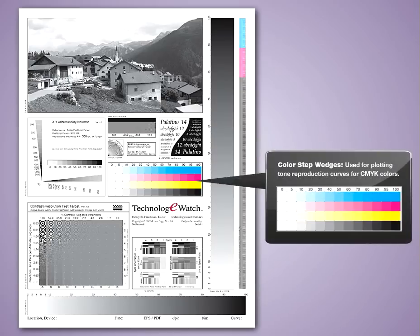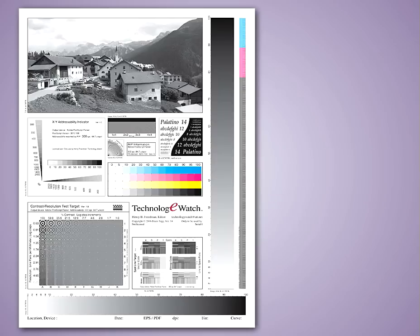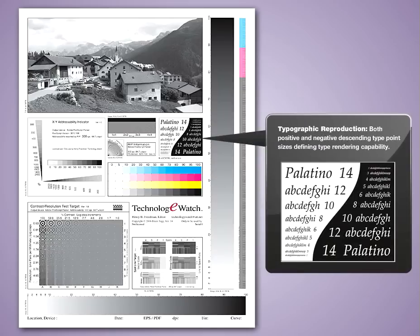Color step wedges. Used for plotting tone reproduction curves for CMYK colors. Typographic reproduction.